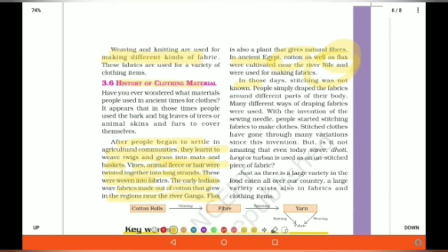In those days, stitching was not known. People simply draped the fabrics around different parts of their body. Many different ways of draping fabrics were used. With the invention of sewing needle, people started stitching their fabrics into cloths. Stitched cloths have gone through many variations since the invention. But, it is not amazing that even today, saree, dhoti, lungi or turban is used as an unstitched piece of fabric.